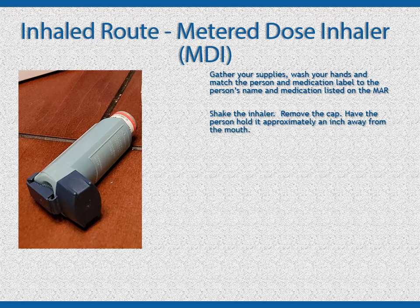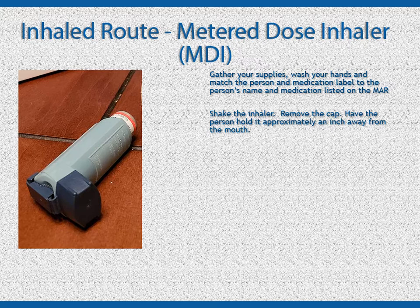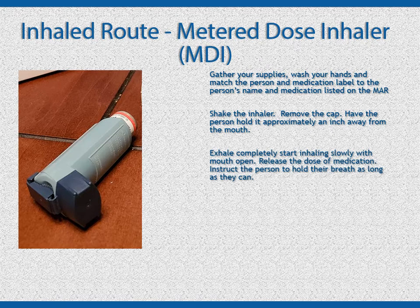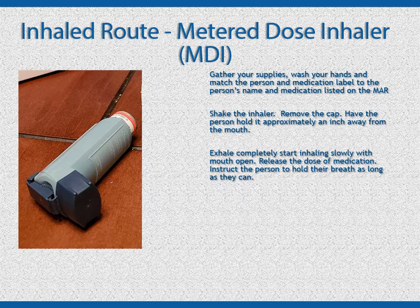Shake the inhaler canister well. Remove the cap and turn the inhaler with the mouthpiece on the bottom and the canister sticking out the top. Have the person hold the canister about an inch from in front of their mouth — about the width of two or three fingers. Have the person blow air out of their lungs until they feel empty, then begin to inhale slowly through the mouth until their lungs feel full. As the person begins to inhale, compress the drug canister to release the metered dose of drug.